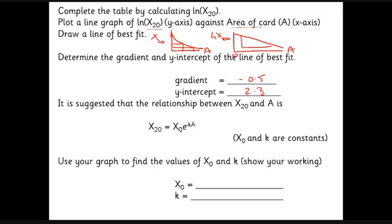Then you get this suggestion that the relationship is this kind of equation, where x₂₀ is the amplitude after 20 oscillations, x₀ is the amplitude after no oscillations, times e to the minus kA, where A is the area and k is some constant. So you have to be able to do this analysis: x₂₀ equals x₀ e to the minus kA.